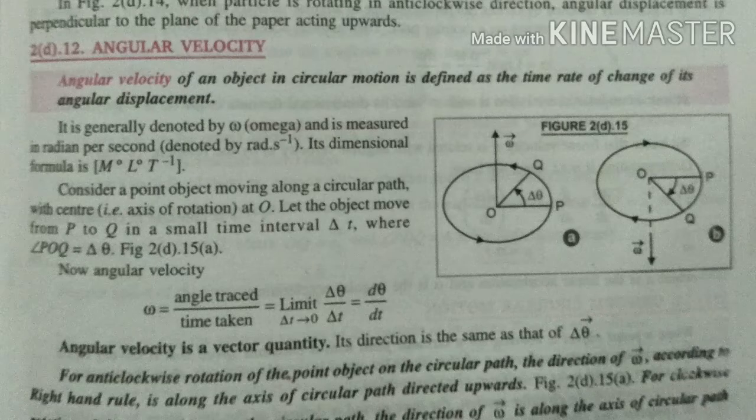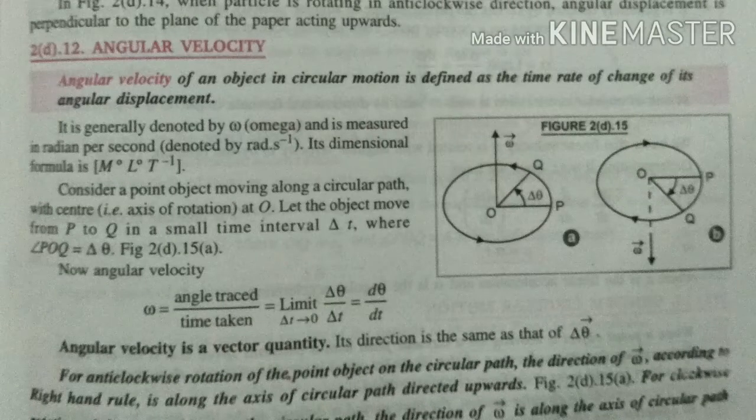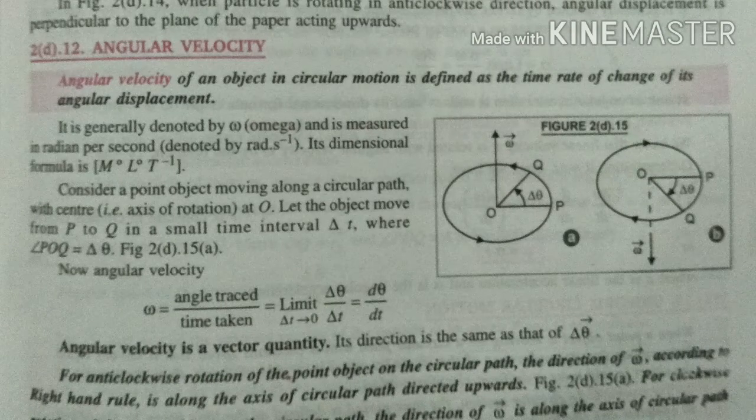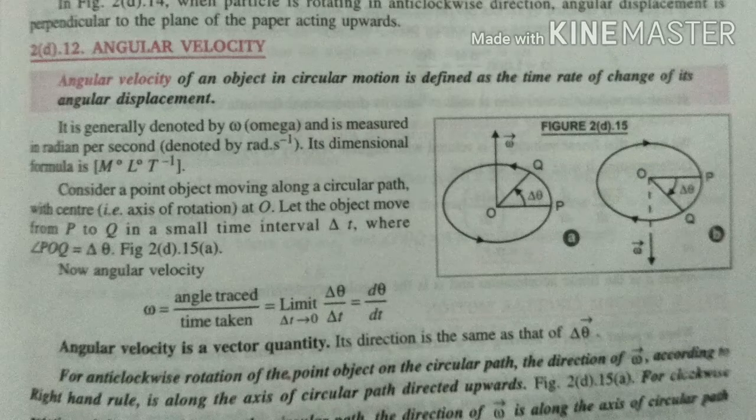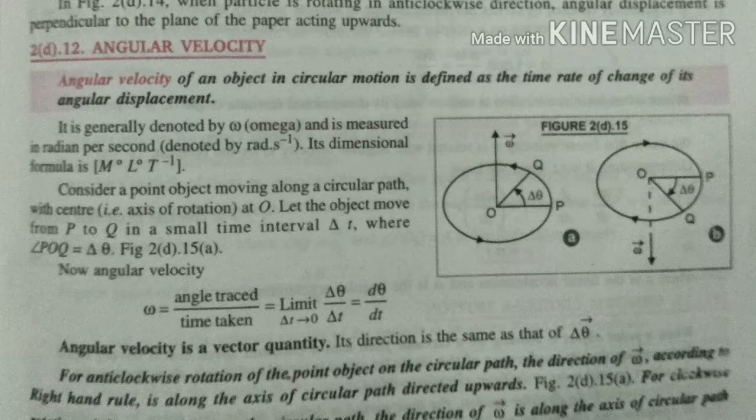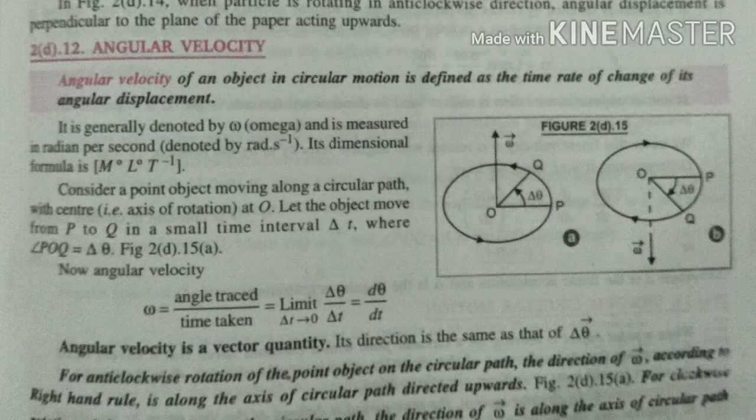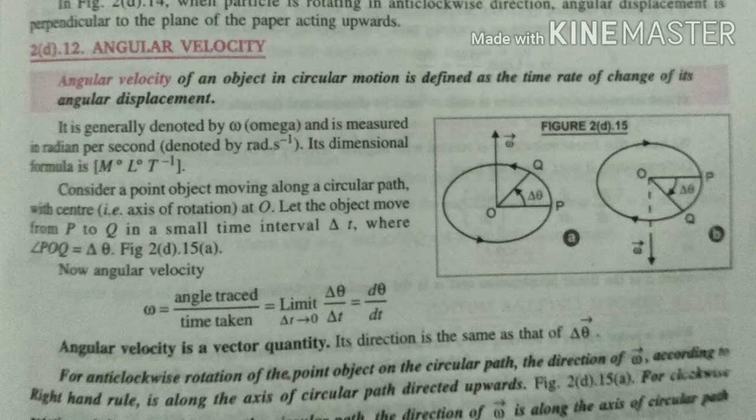Displacement by time, so what will happen in this? Angular displacement by time. Angular means to say that this is an object in circular revolution. It is denoted by omega, measured in radian per second, and its dimension is M⁰L⁰T⁻¹.